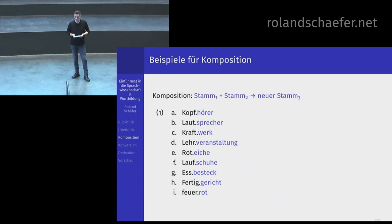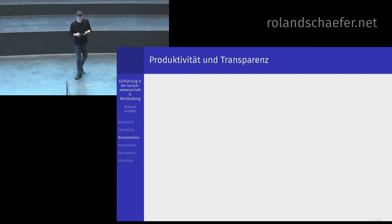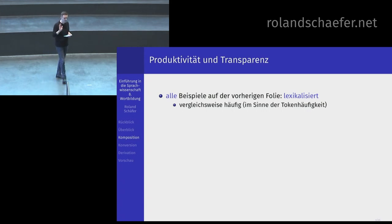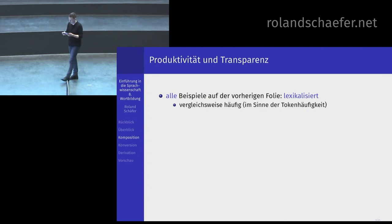Erinnern Sie sich an das Beispiel aus der ersten Sitzung: wenn Sie Vorschulkinder fragen, warum heißt Geburtstag Geburtstag, kriegen Sie Antworten wie: weil es da Kuchen gibt. Da wird keine Beziehung hergestellt zu den Einzelteilen und der Gesamtbedeutung. Das fällt unter die Begriffe Produktivität und Transparenz. Alle Beispiele sind lexikalisiert, das heißt auch, sie sind vergleichsweise häufig. Die sind vergleichsweise häufig – Sie würden erwarten, diese Wörter irgendwann, wenn Sie genug Texte gelesen haben, mal alle gelesen zu haben.